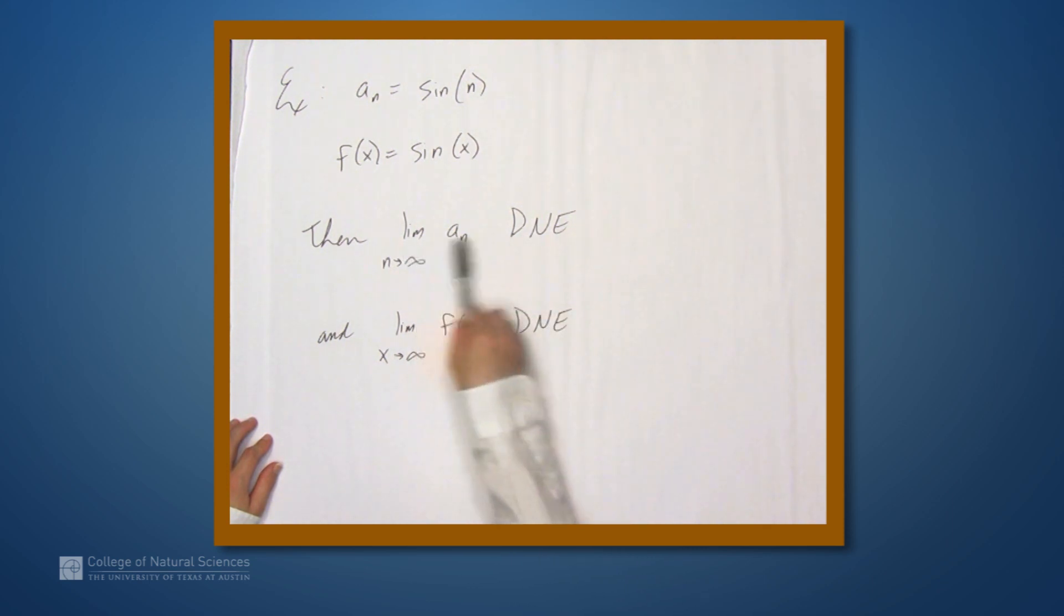Now, we didn't prove this. This isn't a trivial thing to prove that this sequence here, a sub n equals sine of n, doesn't converge, but it's true that it doesn't converge. And the problem with this example and the previous one is that the function we have here doesn't have a limit as x goes to infinity. So in those cases, you can't conclude anything.